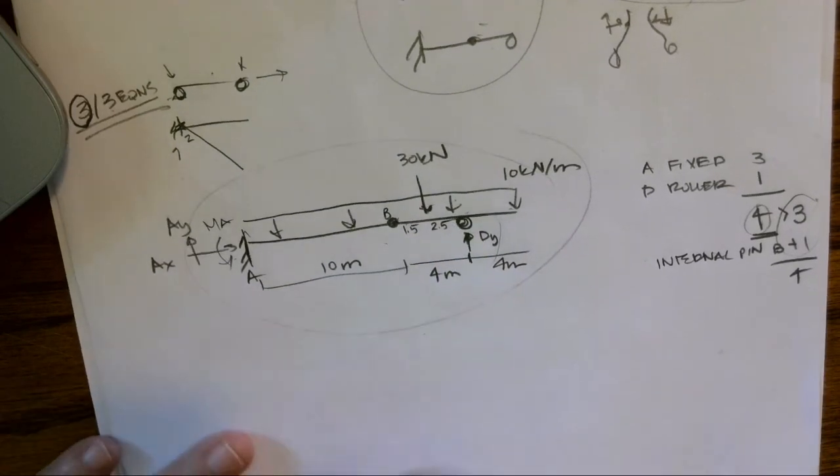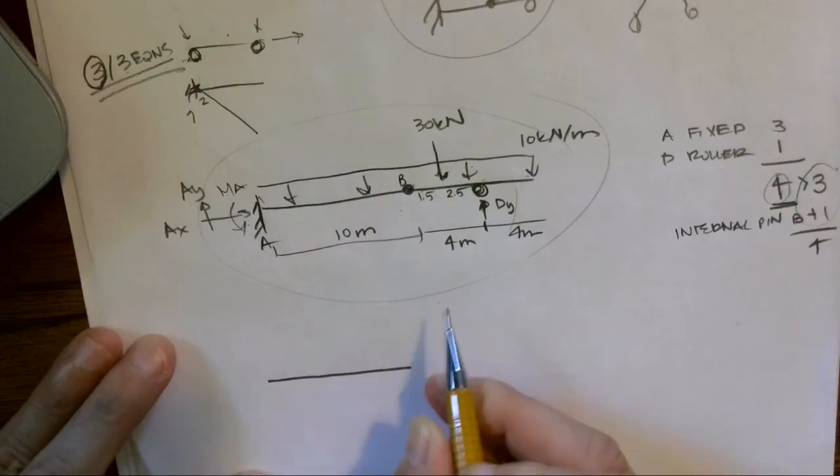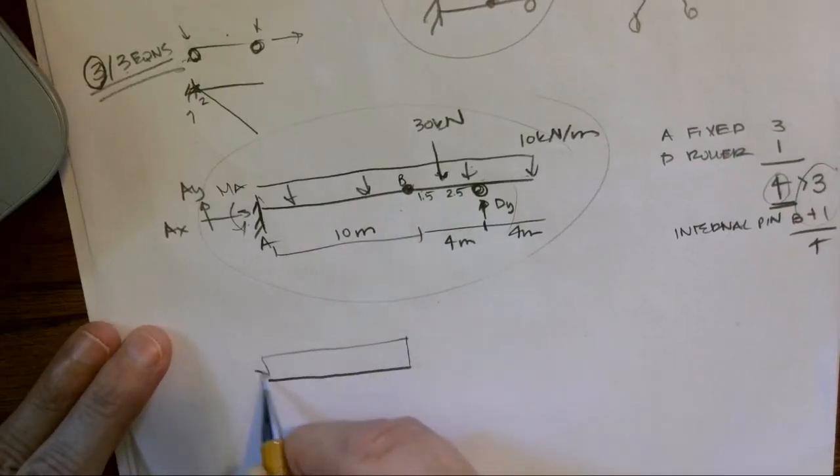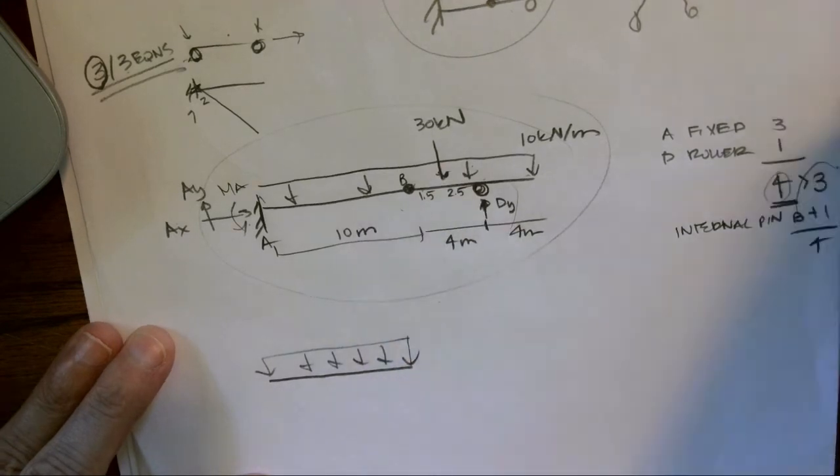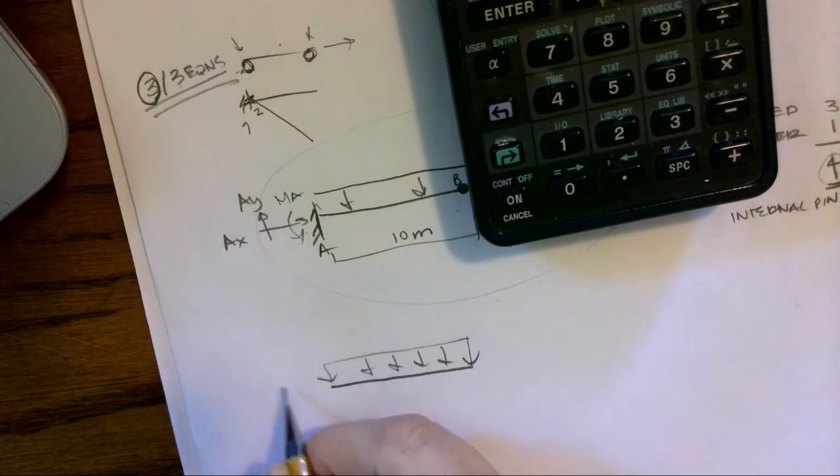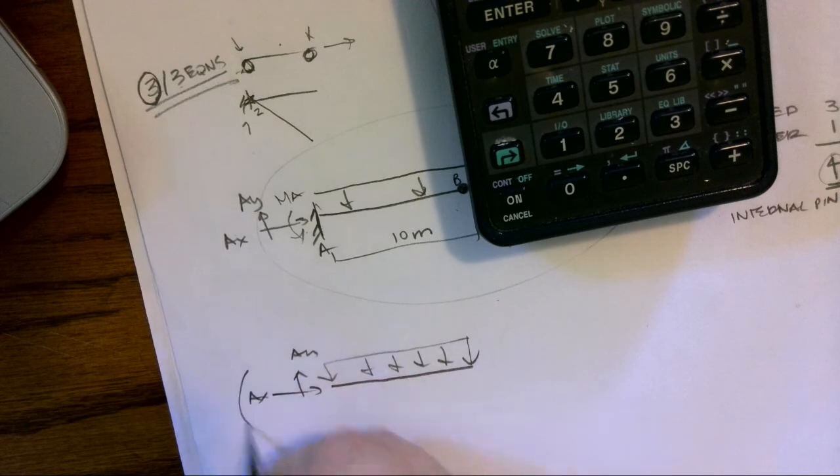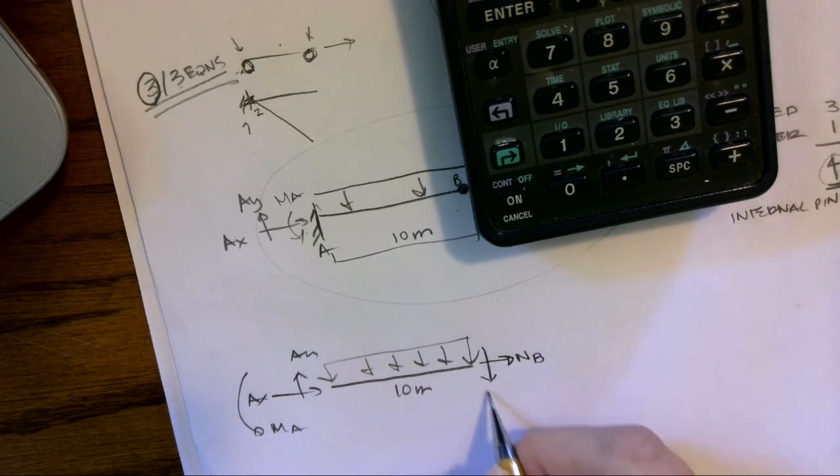So too many unknowns. At B I can break it apart. If I look at B, I have to draw everything that's to the left of B. I can see that I have AX, I have AY, I have my moment at A. This is 10 meters. At the pin I can transfer a normal force and I can transfer my shear force, and this was 10 kilonewtons per meter.